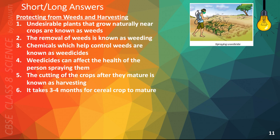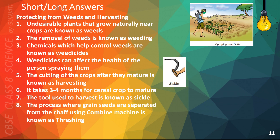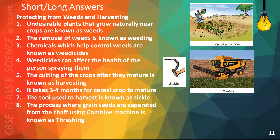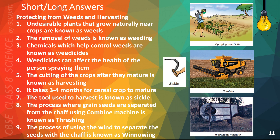The cutting of the crops after they mature is known as harvesting. It takes about three to four months for a cereal crop to mature. The tool used to harvest is known as a sickle. The process where grain seeds are separated from the chaff using a combine machine is known as threshing. The process of using the wind to separate the seeds with the chaff is known as winnowing.